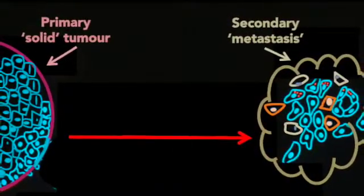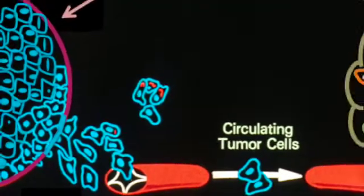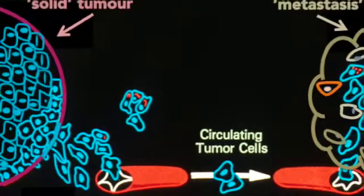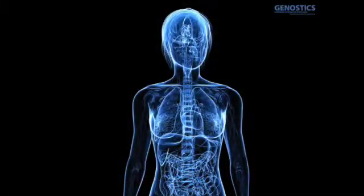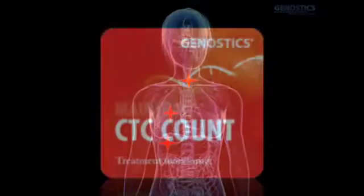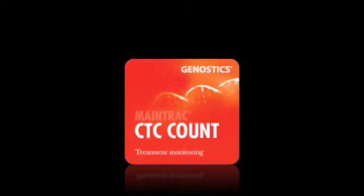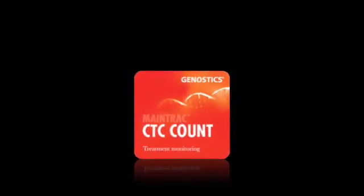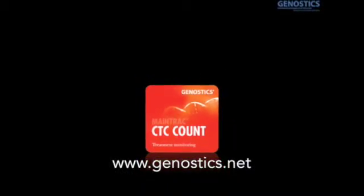Solid tumours do not directly lead to the death of the patient — it's the metastasis developing from solid tumours which leads to the fatal outcome. These metastases must have developed from cells that leave the tumour and via circulation reach their destination, like lung, liver, and bones, and can lead to fatal metastasis. That's why we think they are very important to track. For more information, please contact Genostics at www.genostics.net.